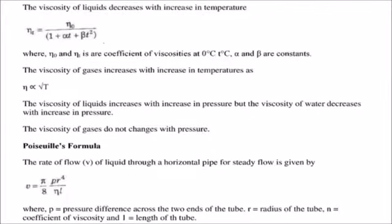Variation of viscosity: the viscosity of liquids decreases with increase in temperature. If temperature increases, viscosity decreases. Eta t is equal to eta 0 by 1 plus alpha t plus beta t square. Eta 0 is the coefficient of viscosity at 0 degrees, eta t is the coefficient of viscosity at t degrees. Alpha and beta are constants.